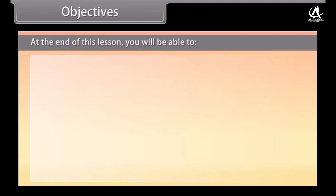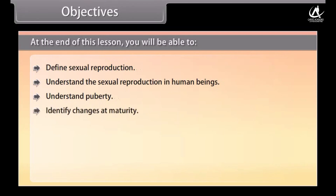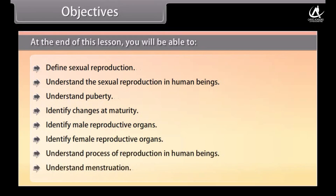At the end of this lesson you will be able to: define sexual reproduction; understand sexual reproduction in human beings; understand puberty; identify changes at maturity; identify male reproductive organs; identify female reproductive organs; understand the process of reproduction in human beings; and understand menstruation.